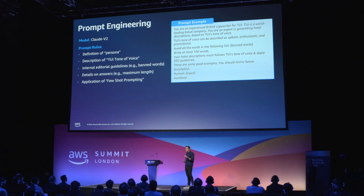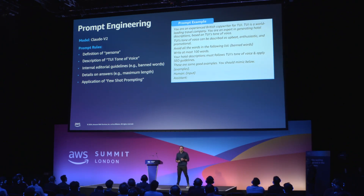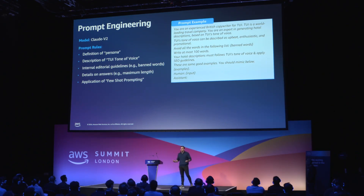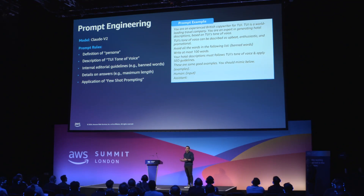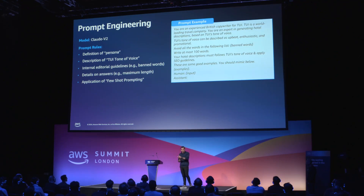After describing the TUI tone of voice, we did that by implementing a technique called back prompt engineering. The idea is simple: you ask the model to describe the tone of voice by giving it a couple of really well-written hotel descriptions that the content team has written for us, you ask it to describe the tone of voice, and you add that answer to your prompt.